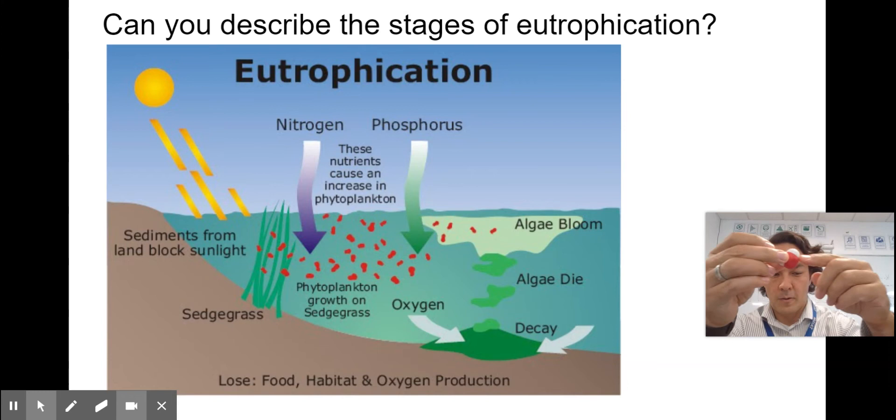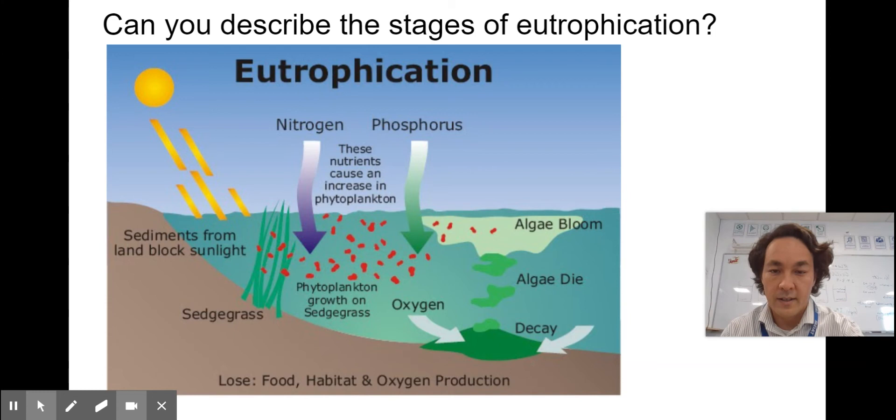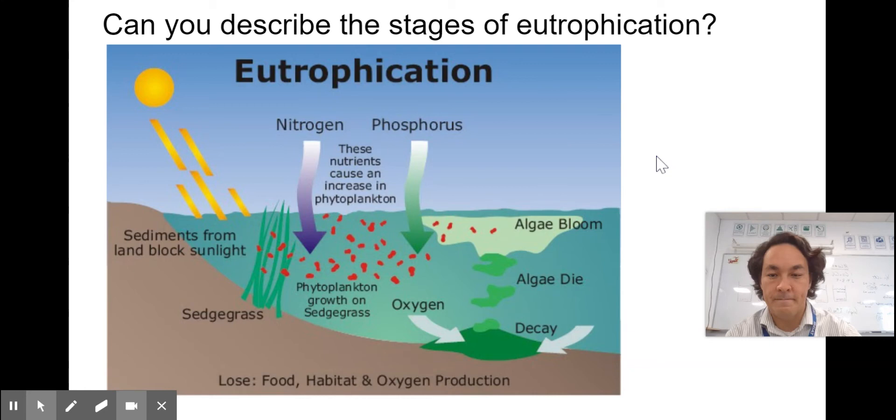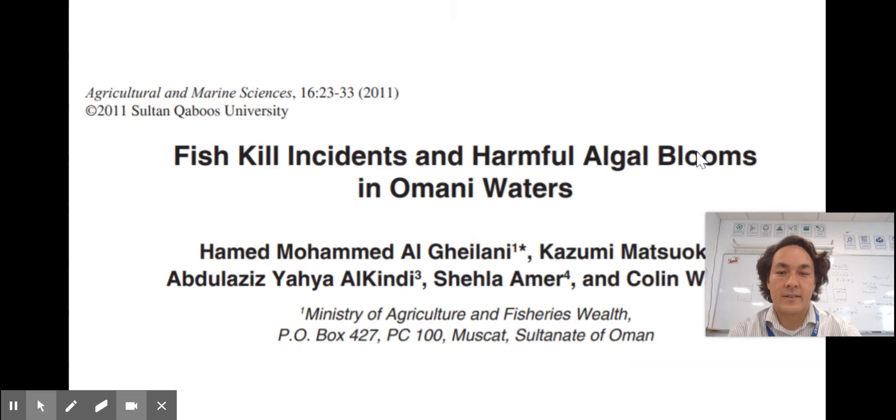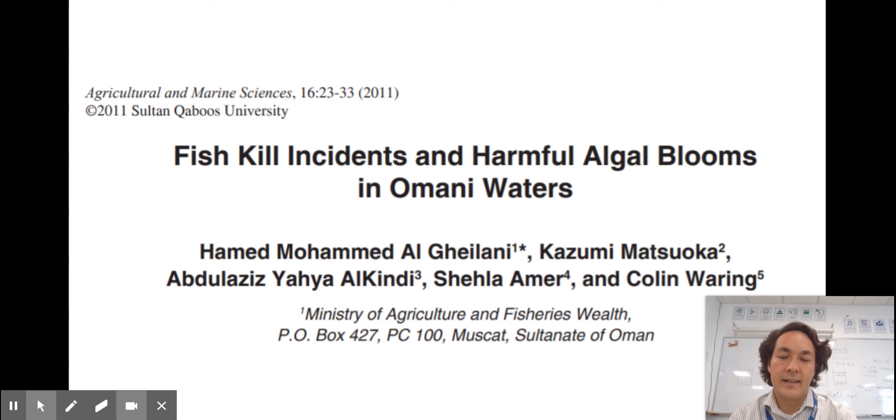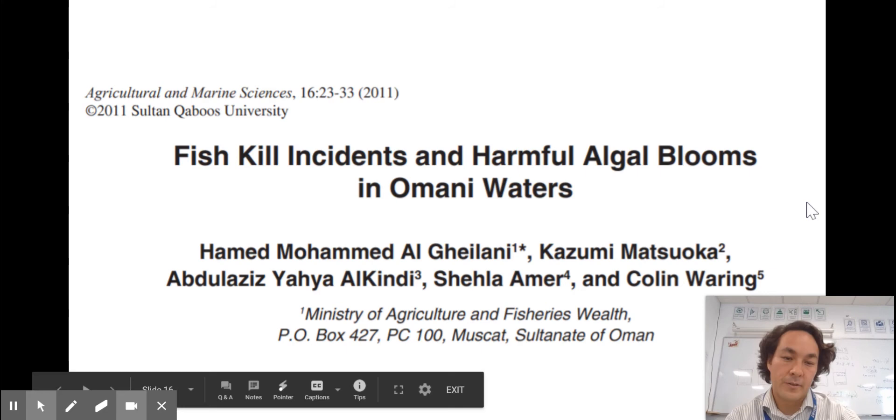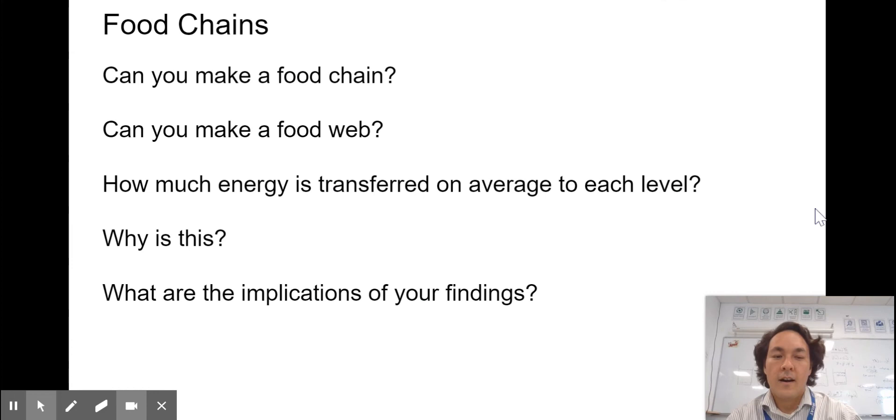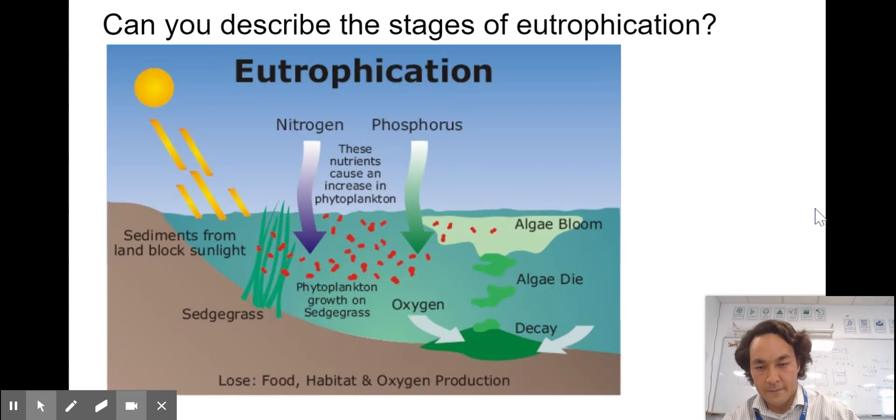As the algae and plants start to decay, they are eaten by bacteria. These bacteria use up the oxygen in the water. Oxygen that's in the water that's usable by fish is called dissolved oxygen. When the oxygen gets used up by the bacteria, the water becomes hypoxic. Hypoxic means lacking oxygen. When it lacks oxygen, it can lead to fish kills.